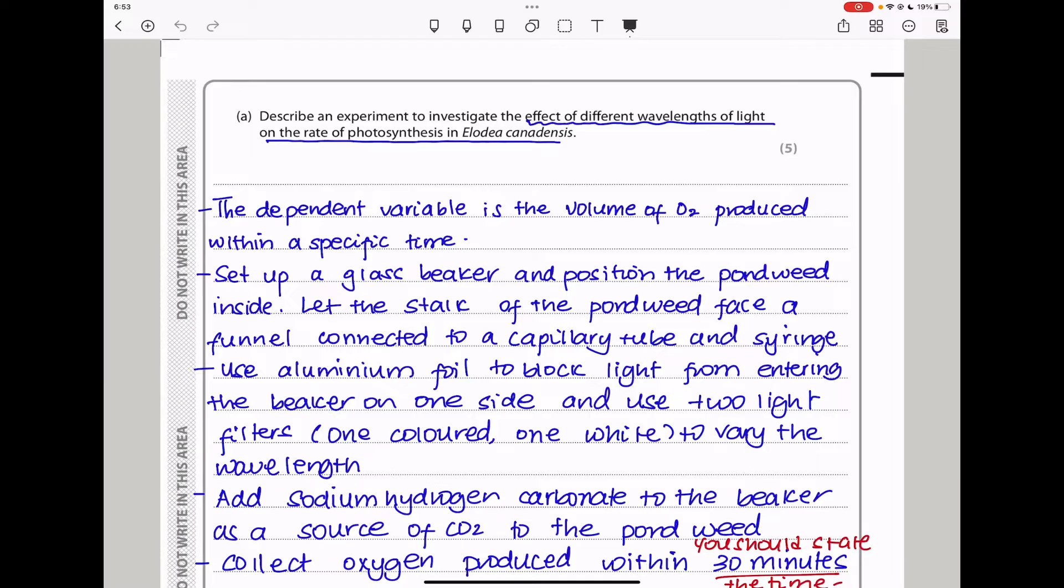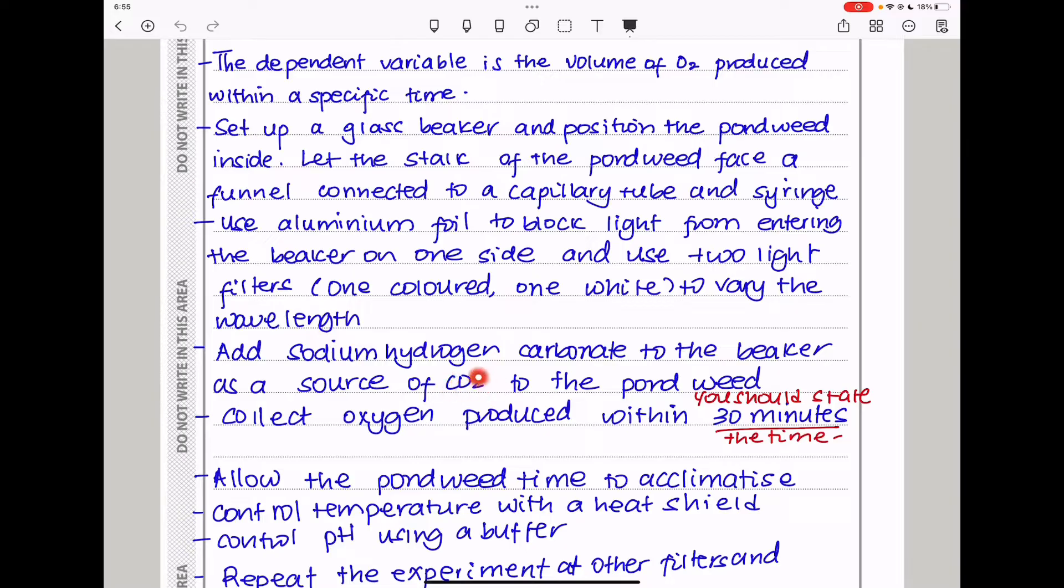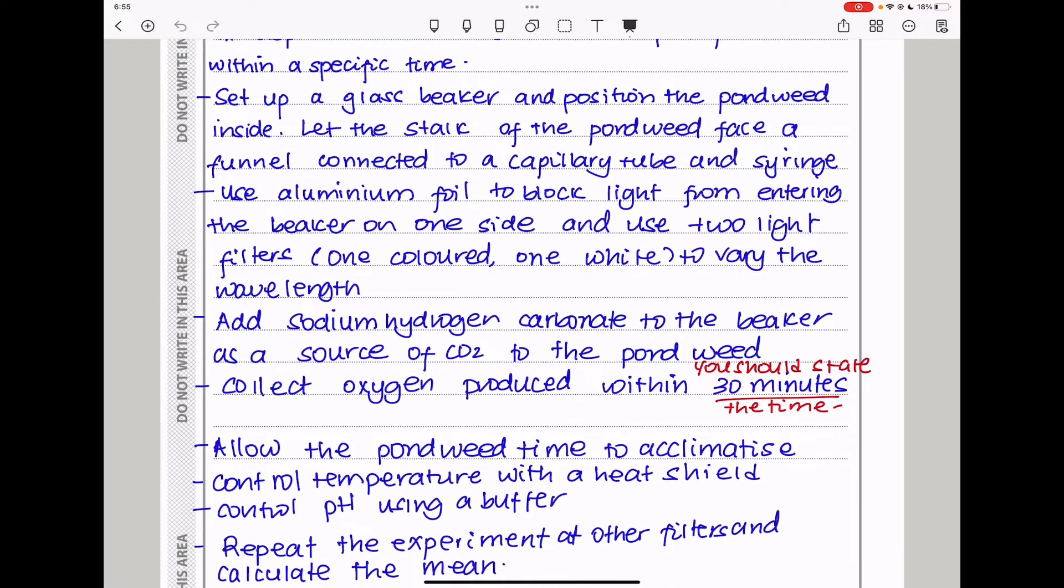So I said set up a glass beaker and position the pondweed inside. Let the stalk of the pondweed face a funnel connected to a capillary tube and a syringe. Use aluminium foil to block light from entering the beaker on one side and use two light filters—one is going to be the control where we have the white light and the other could be one or more colored light filters in order to vary the wavelengths. Then I said add sodium hydrogen carbonate to the beaker as a source of carbon dioxide to the pondweed. CO2 cannot be added as a gas because it's going to confuse with the volume of oxygen we're trying to measure.